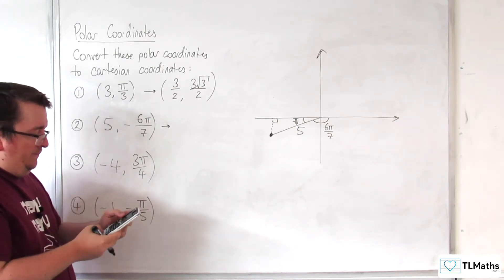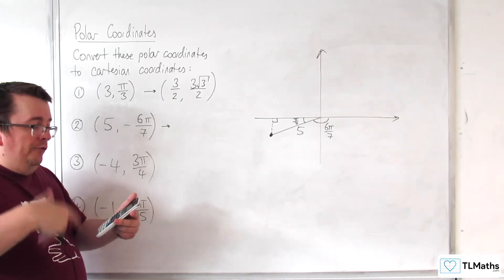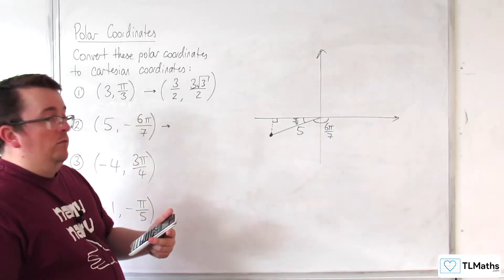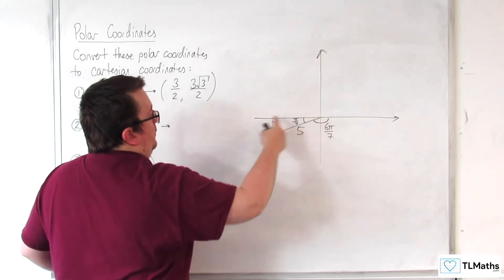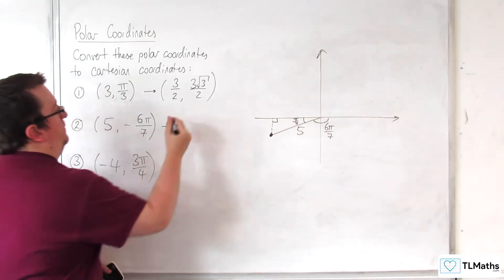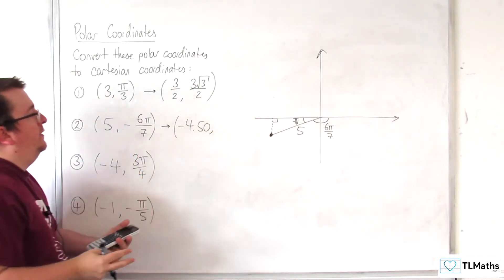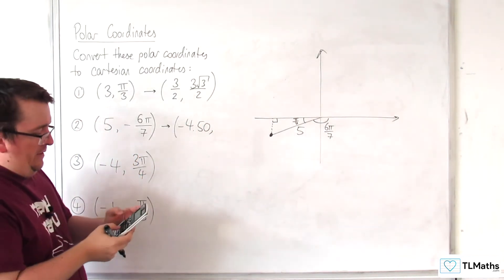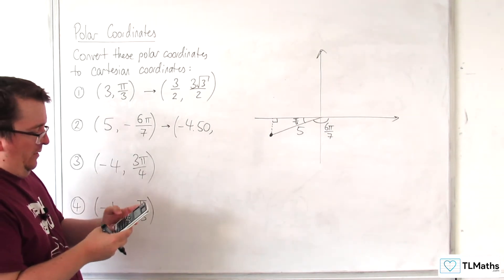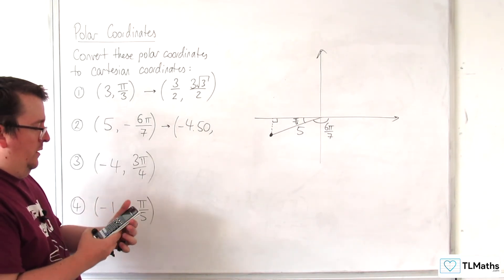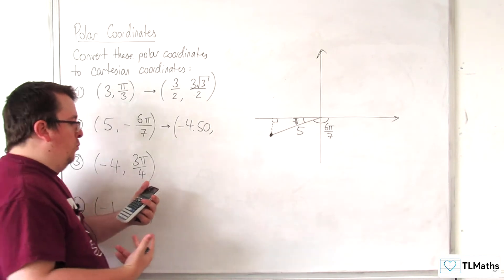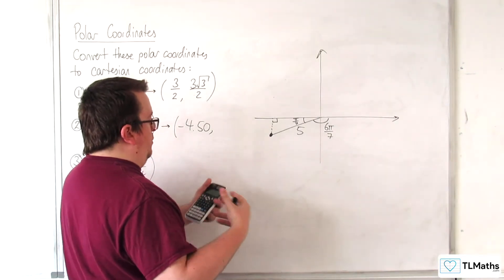Now, if you do that, we get minus 4.50, which confirms that we are in this correct quadrant. So, minus 4.50, I'm going to write these to three significant figures. And 5 sine of minus 6 pi over 7, we get minus 2.169, so minus 2.17.